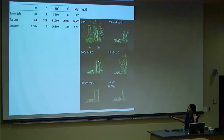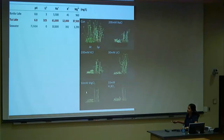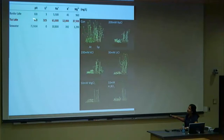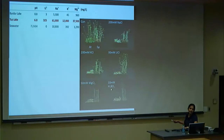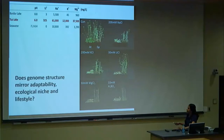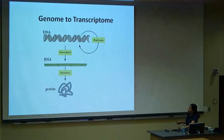The same story holds for high potassium, high lithium, high magnesium, and borate stress — Arabidopsis dies while parvula continues growing and producing seeds. This confirms in the lab what we see in the field. So does genome structure mirror adaptability, ecological niche, and lifestyle? Can we use the genome to identify what components make this a tolerant plant?